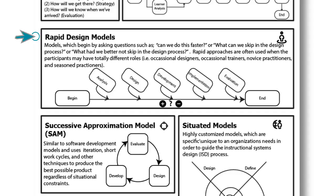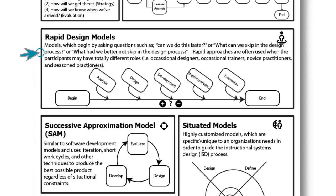With these rapid models, three main questions are often asked: How can we do things faster? What can we skip in the design process? And what had we better not skip in the design process? This rapid approach, and models for it, often stayed close to the traditional ADDIE approach, but did not require the phases in the process to be strictly adhered to.